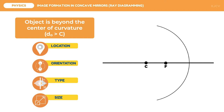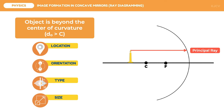Let us first look at the image formation of an object placed beyond the center of curvature, written as D sub O greater than C. The first step is to place the object on the diagram. Since it is beyond C, we expect its distance is greater than the radius, so we place it anywhere beyond C, on the left, measuring from the vertex going left. In ray diagrams, we use at least two rays. The incident rays are drawn in solid lines while the reflected rays are drawn in broken lines.